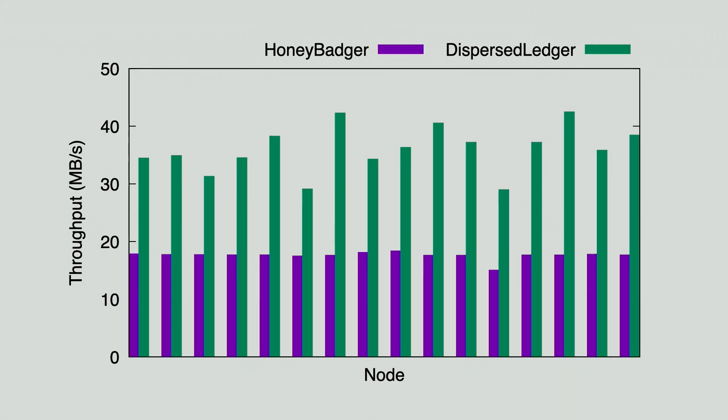Here's the throughput measurement. Each bar is one node, and we see that Dispersed Ledger provides 2x better throughput than Honey Badger.